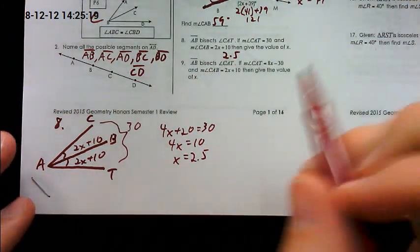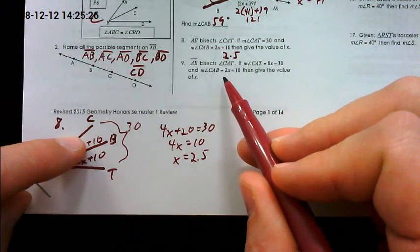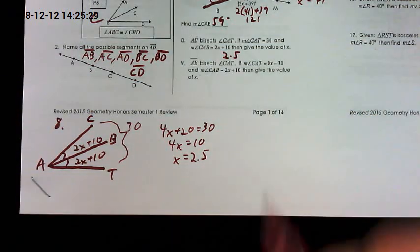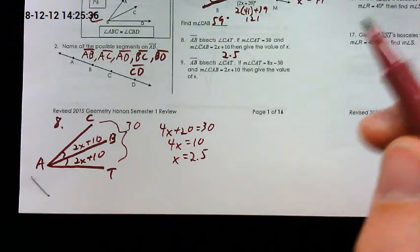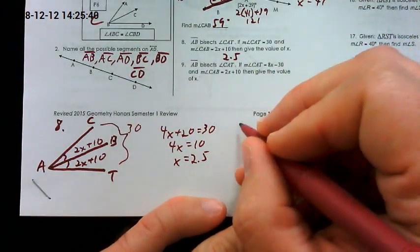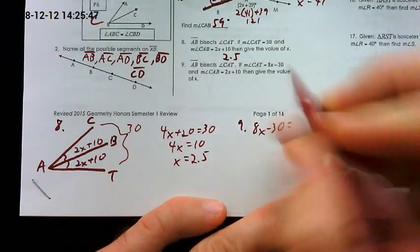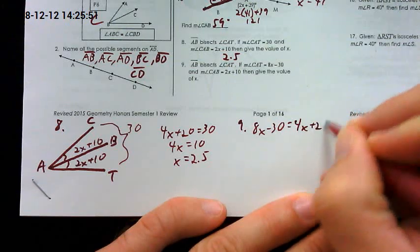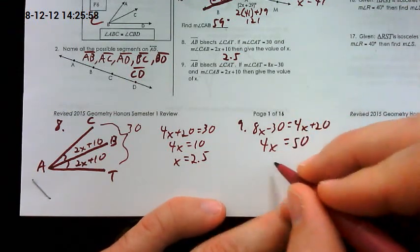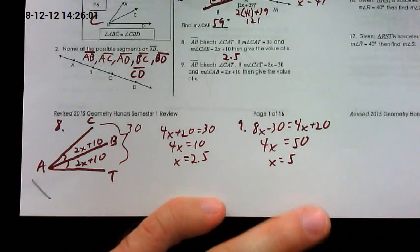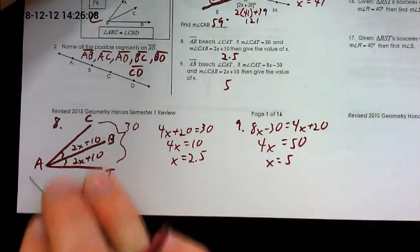Number 9, this one was much better. Same diagram, but you'll notice they gave us CAT which is the whole thing, CAB which is this one, and then find the value of X. I don't know why 9 had such better answers than the last one because essentially it's the same thing, there's just actually more algebra in this one. But now doubling that one, bring the 4X this way you get 4X, add the 30 you get 50, divide by 4 and X is 5.